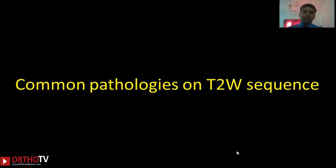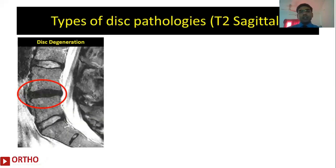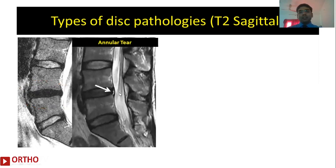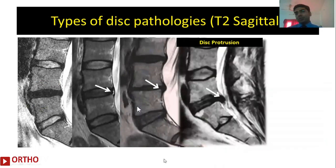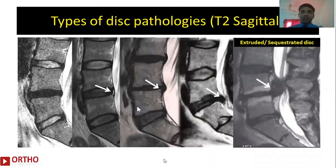Common pathologies seen on the T2-weighted sagittal sequence include degenerative pathologies: disc degeneration characterized by a black disc, an annular tear which is a hyperintense zone in the posterior aspect of the intervertebral disc, a contained herniation where the disc has not crossed or traversed the posterior longitudinal ligament, and you can also identify a protrusion, extruded, or sequestrated disc on a T2 sagittal image.